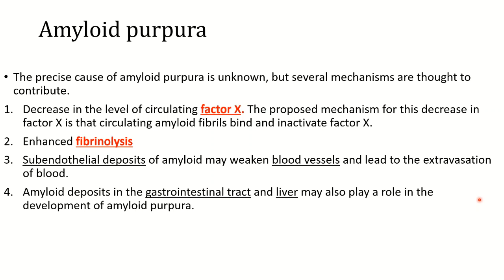The second depositional disease causing retiform purpura is amyloid purpura. Amyloid can result in purpuric lesions through various factors: decreased circulating factor X, increased fibrinolysis, subendothelial deposition of amyloid weakening the vessel wall, or involvement of the liver causing various defects in the coagulation pathway.